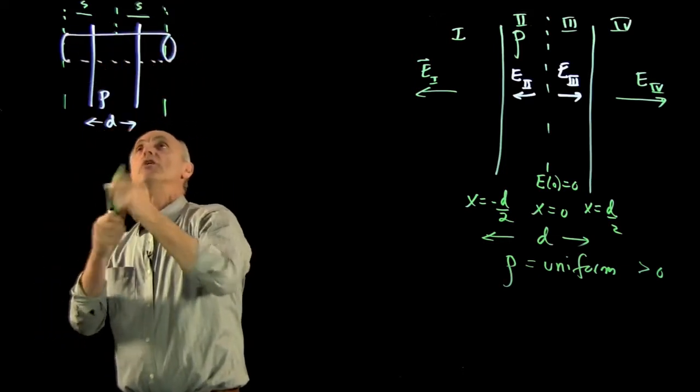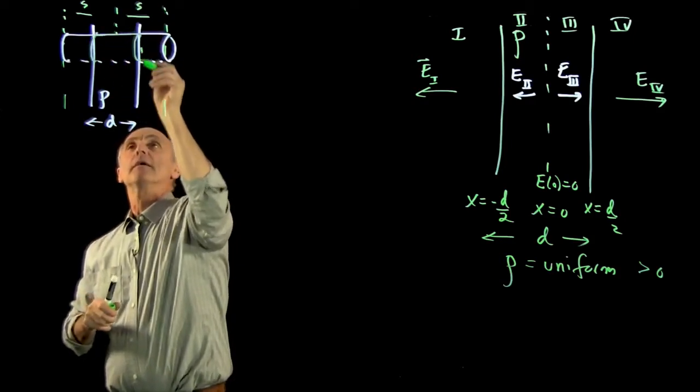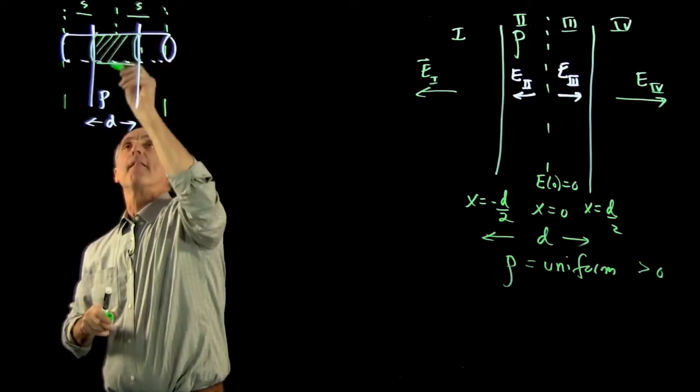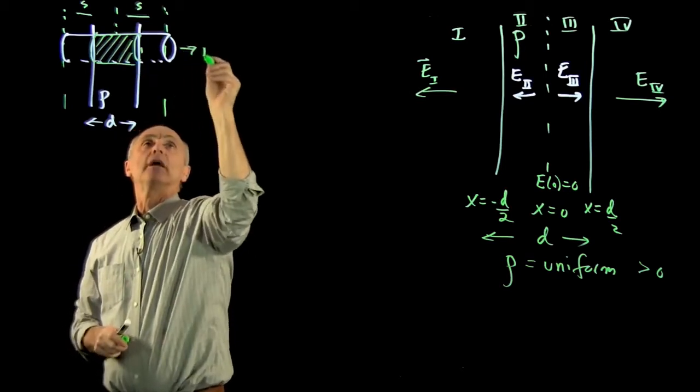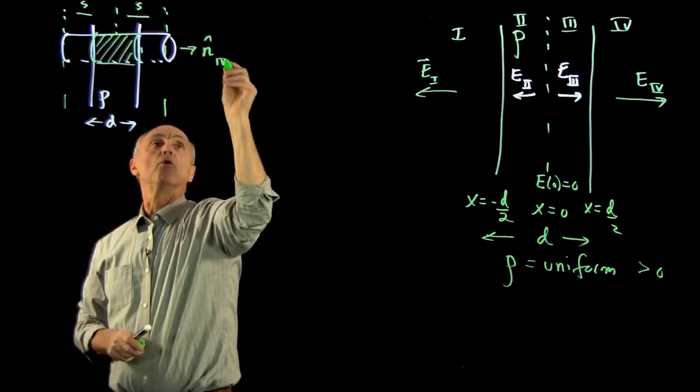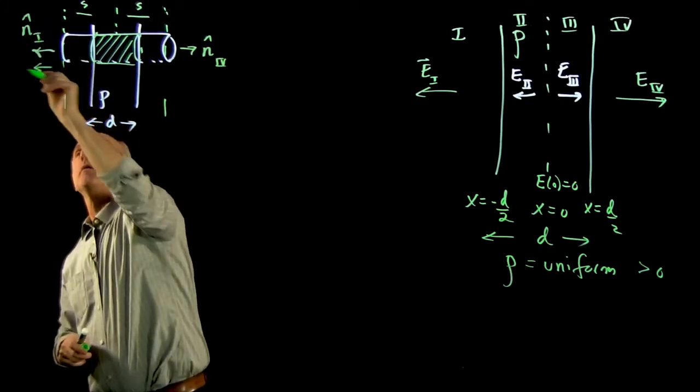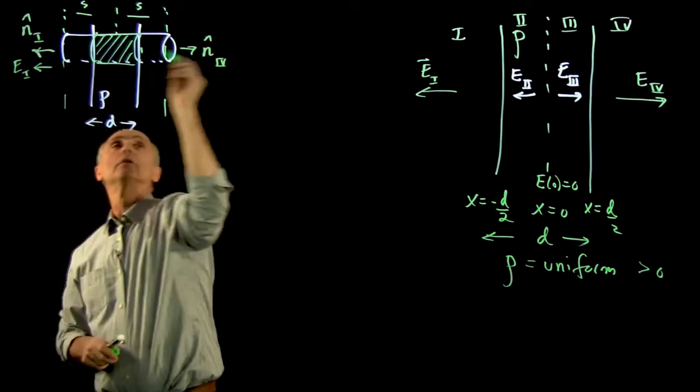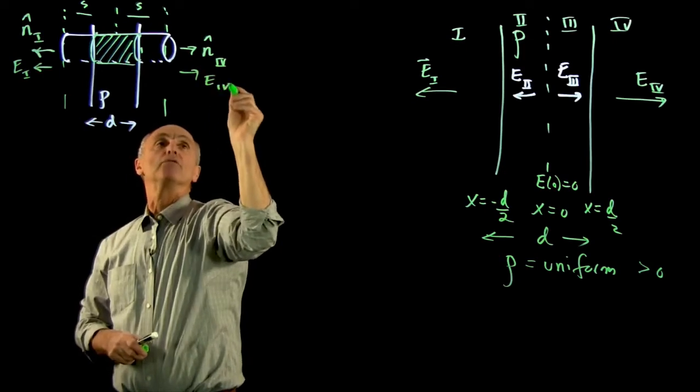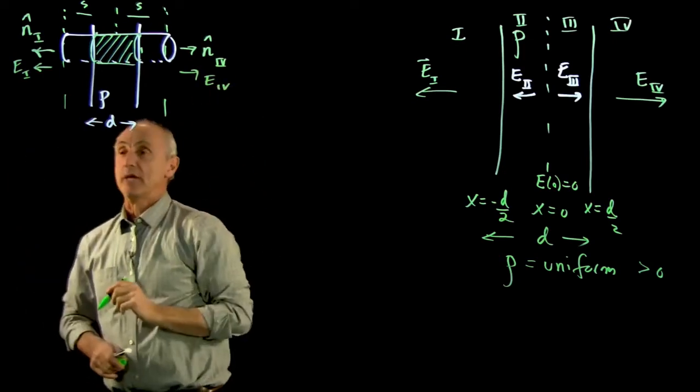So our Gaussian surface will look like a cylinder. And the charge enclosed is in this region. Now, again, we have n hat. This is region 4. We have n hat region 1. We have e region 1, we have e region 4, but we've said those are the same magnitudes.